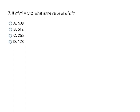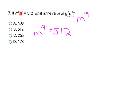Here they tell us that m to the 4th times m to the 5th is 512, and ask for the value of m to the 6th times m cubed. I simplify both: the m's match and are being multiplied, so I add the exponents. m^4 · m^5 gives m to the 9th = 512. m^6 · m^3 also gives m to the 9th. Since both equal m to the 9th, this also equals 512 — final answer B.